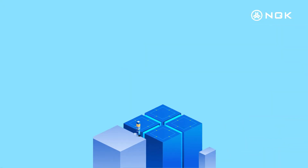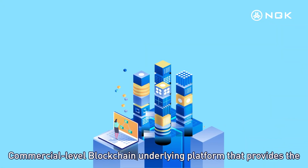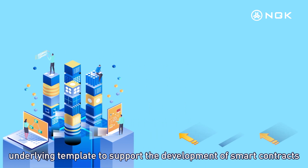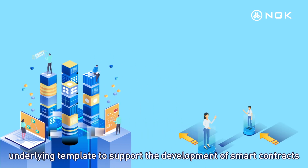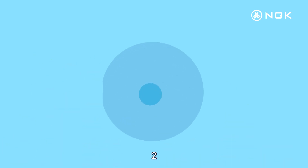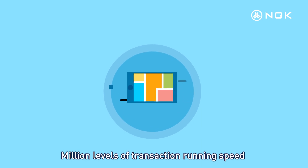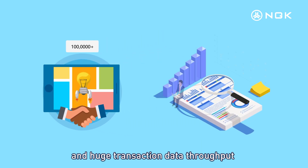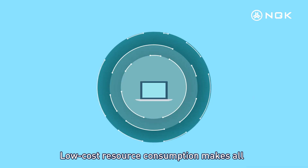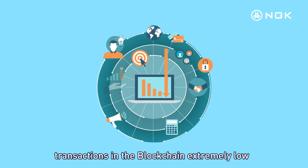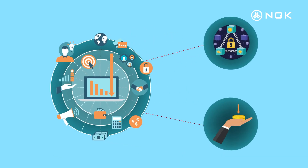NGK.IO blockchain replaces intermediary institutions, linking digital economic rights on-chain with investors and guaranteeing the interests of equity holders and the fairness of value exchange. Key blockchain characteristics: first, a commercial-level blockchain underlying platform that supports smart contract development; second, million-level transaction speeds with huge throughput and low cost.